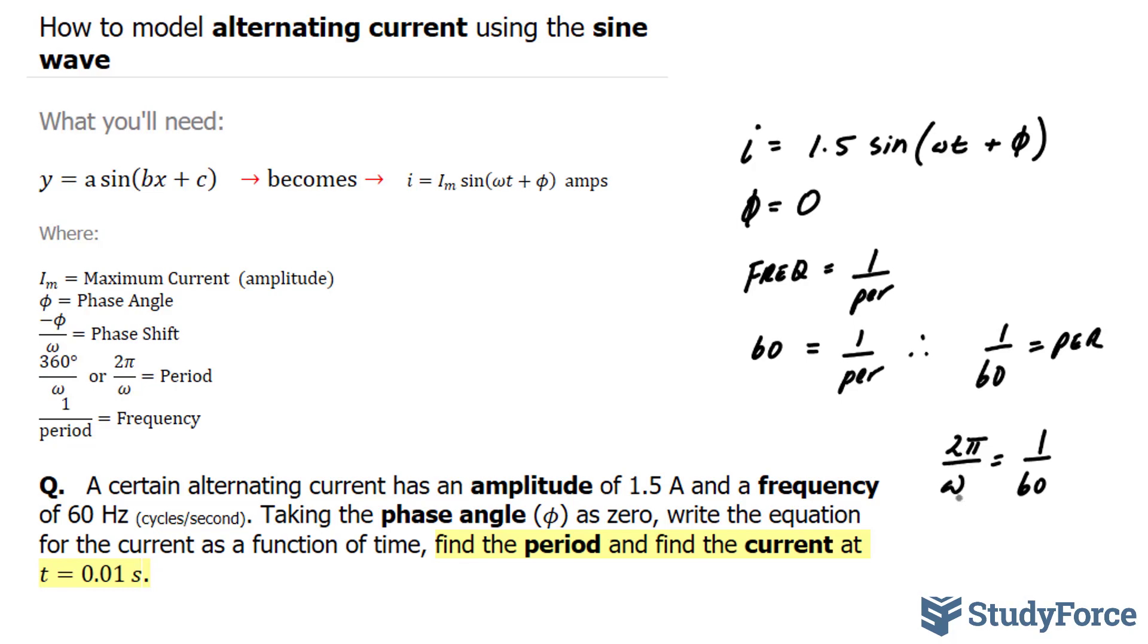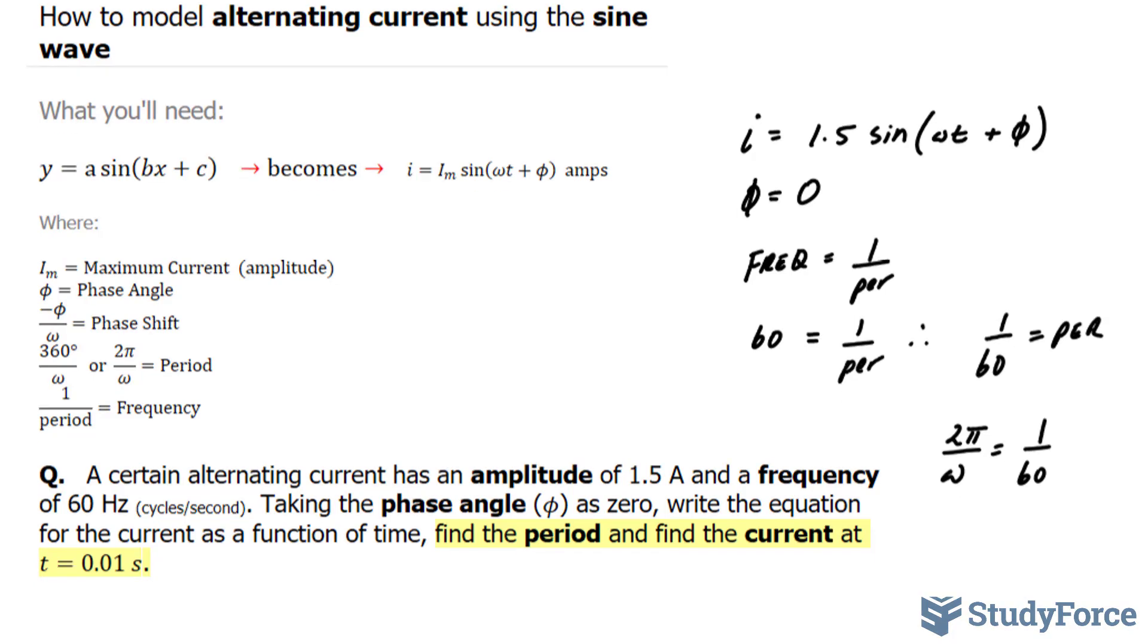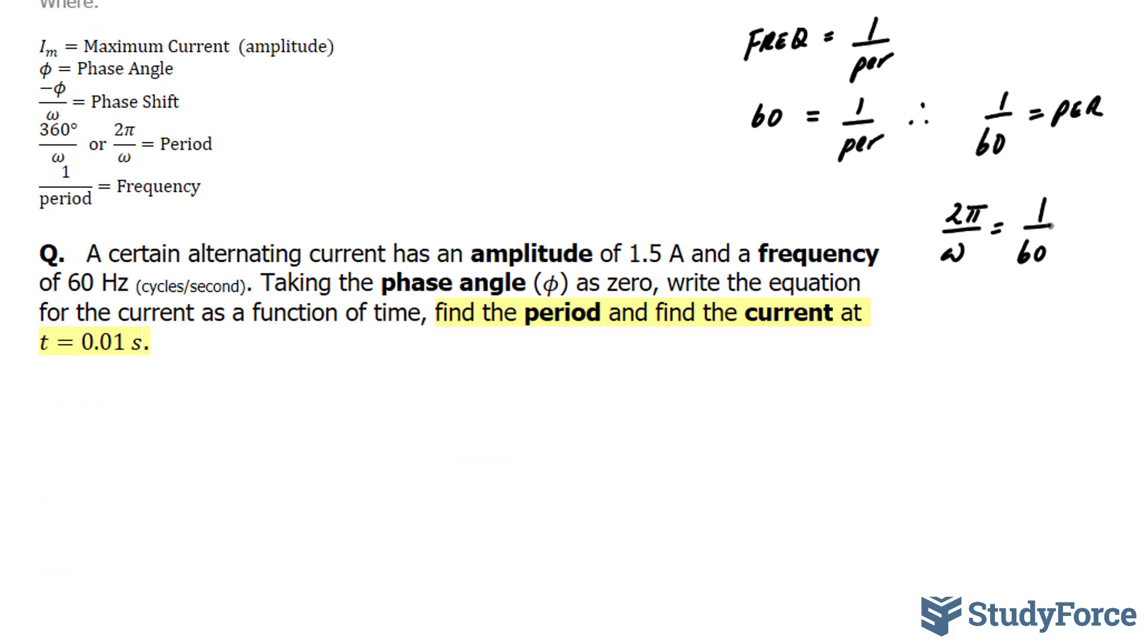I'll isolate for this symbol now by multiplying both sides by 60. Watch what happens. Multiplying this by 60 and multiplying this side by 60 gives me 120 pi over omega is equal to 1. If I multiply both sides now by omega, I end up with 120 pi is equal to omega.